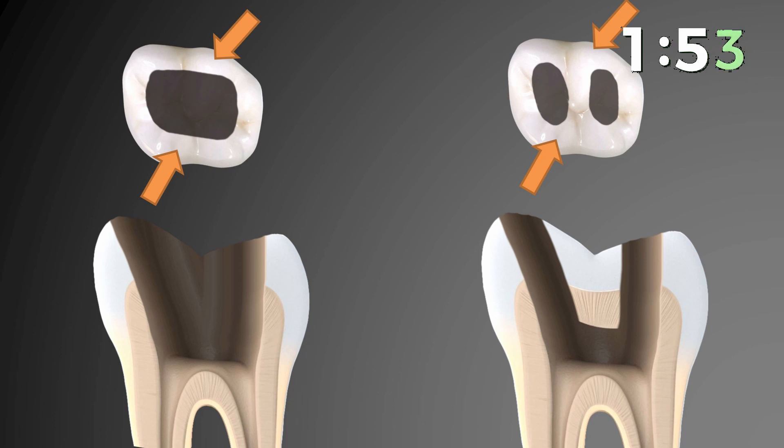In the picture you could see, compared to the conventional access cavity preparation, the truss access cavity preparation leaves tooth structure in between the walls. So this will reinforce the tooth and prevent it from getting fractured.